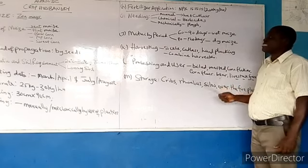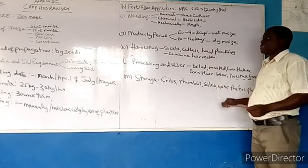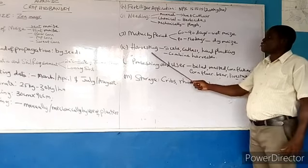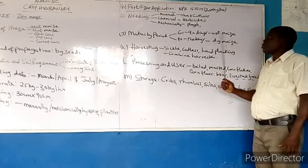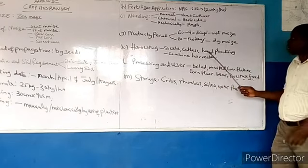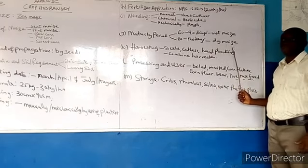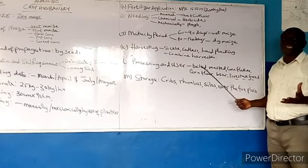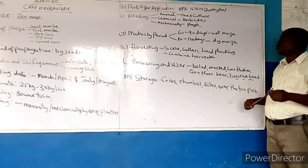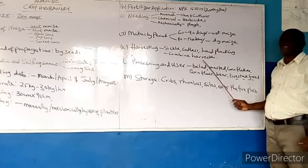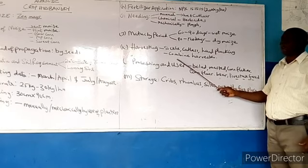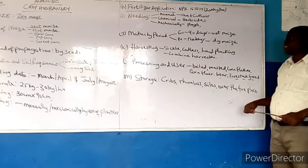Dry maize — the kind you want to harvest as a dry crop — is harvested three to four months after planting. You can harvest maize manually using a sickle, a sharp cutlass, or by hand-plucking on a small farm. In large-scale commercial farms, you use a combine harvester, which harvests the maize and also does minimal processing.